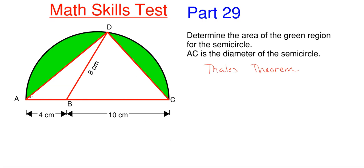We need a triangle inscribed inside the circle, meaning all edges touch the edge of the circle — which A, D, and C do for our larger overall triangle. We also need one side to be the diameter, which A to C is. So the angle opposite the diameter, which is angle D, is 90 degrees.